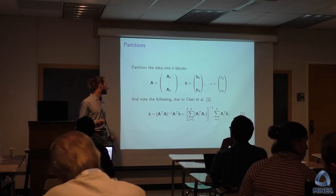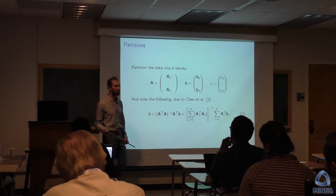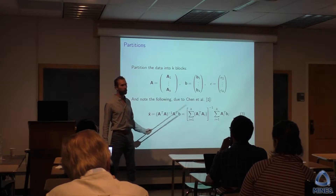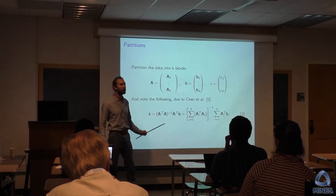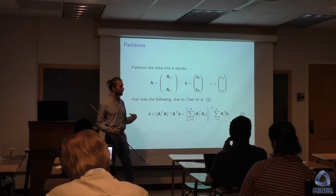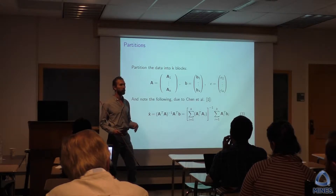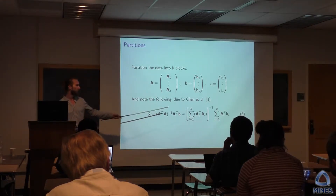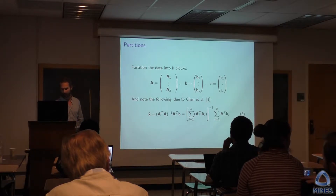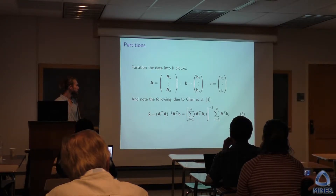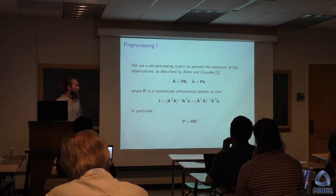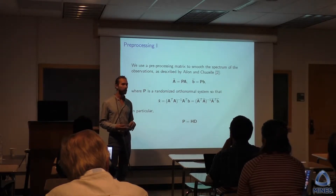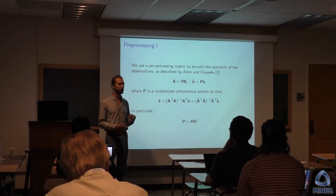So if we don't visit all the data, how close can we get to the true solution? What are the properties of visiting less of the data? Before we can do that, here's part of the motivation: imagine you're given a data set that's very tall, but for which all of the information is contained in very few entries.